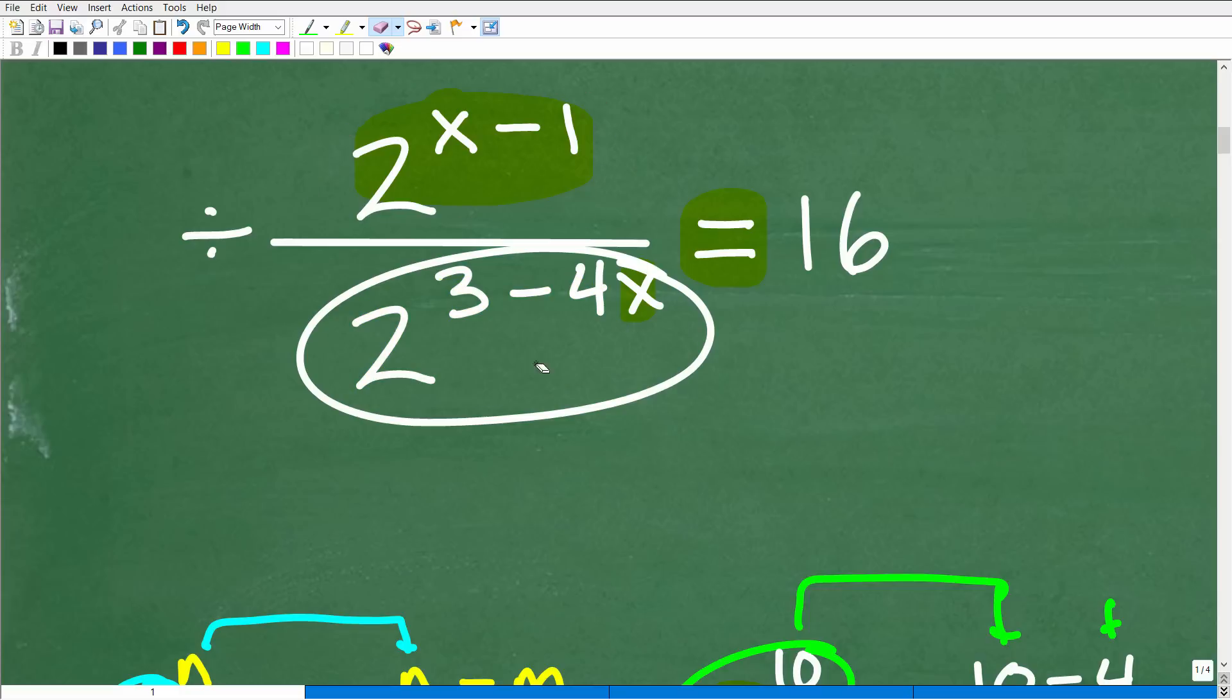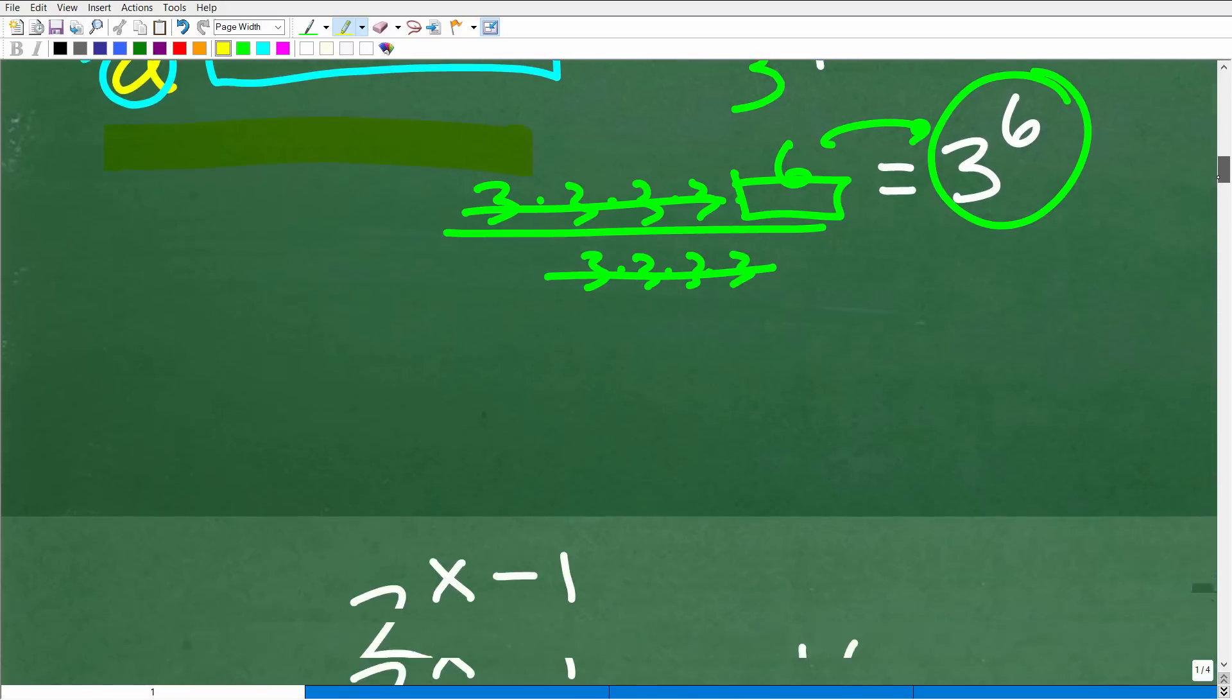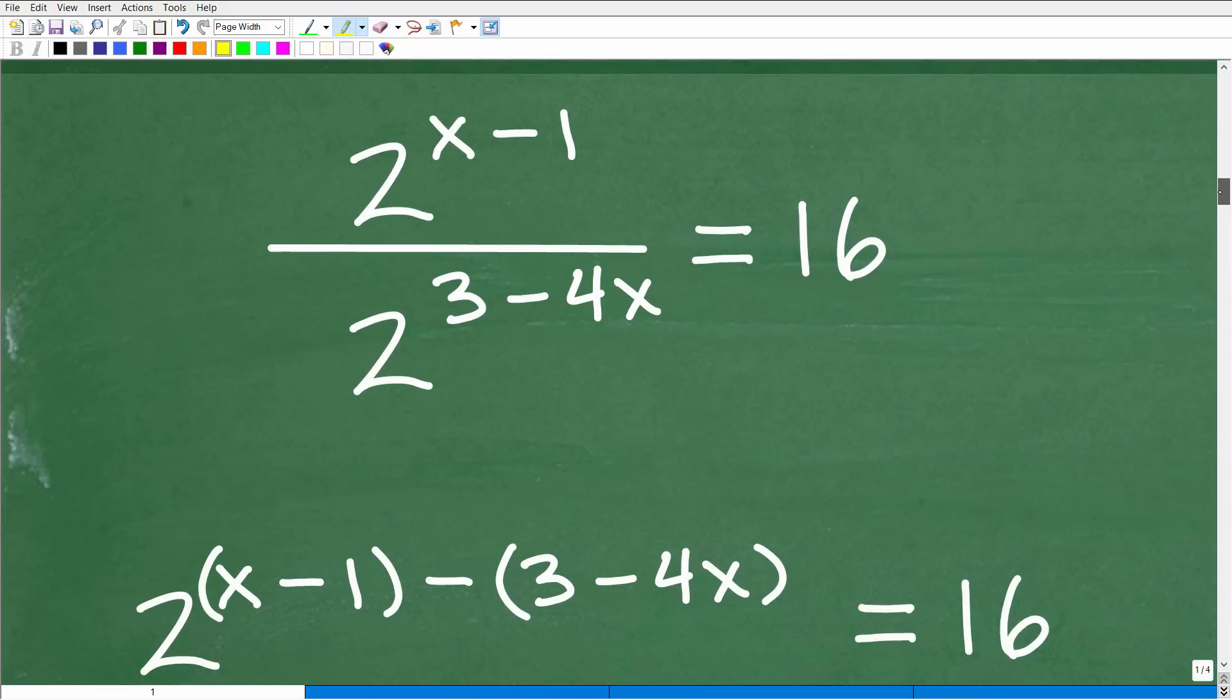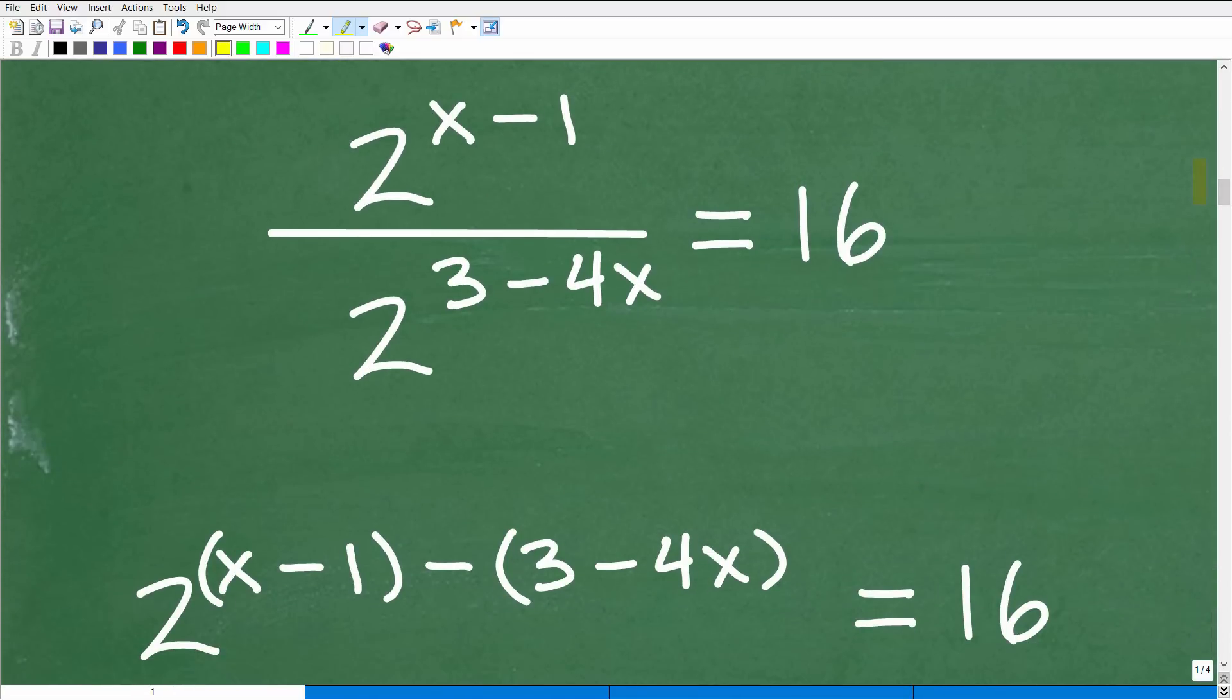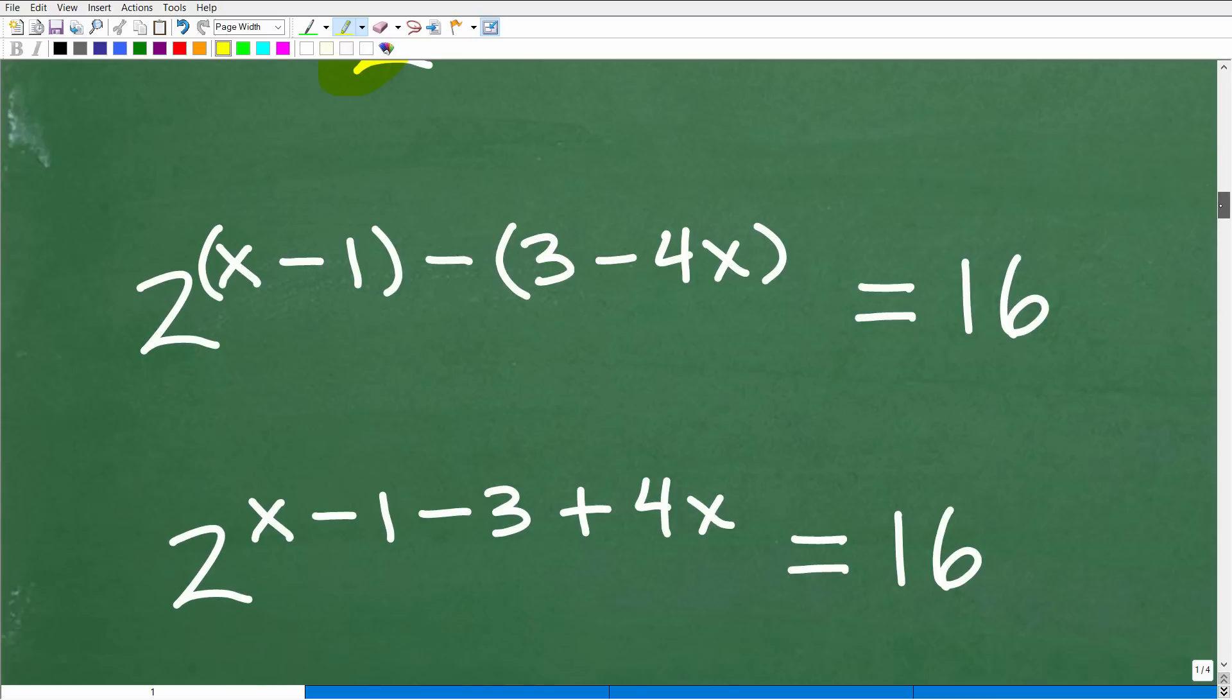We're going to want to apply this rule here. Why? Because notice I have the same bases. I have 2 and 2, that's like a and a or 3 and 3. So I can clean this expression up here, this division of power. We're going to have to take that step. Let's go ahead and do this right now.